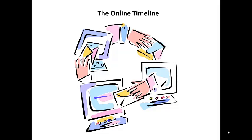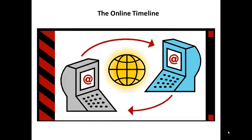In 1971, Ray Tomlinson invented electronic mail, or email, and made the decision to use the @ symbol to separate the username from the computer name, which later became the domain name. In 1973, work began on the Internet Protocol Suite, later called TCP/IP — a standard set of communication protocols to allow diverse computer networks to interconnect and communicate with each other. By 1974, Vint Cerf and Bob Kahn first used the term 'Internet' in a paper about Transmission Control Protocol, or TCP.